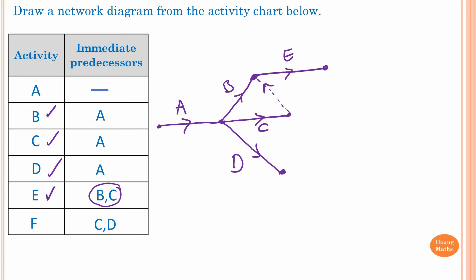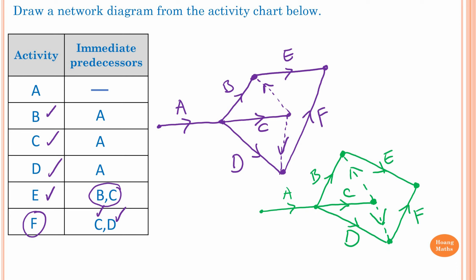For Activity F, we need to complete Activity C and D. You can connect from Activity D across to Activity F, and use a Dummy Activity to connect between C and D as well. So we connect like this — there you go. This is the network diagram for this activity chart. You can redraw the network diagram to make it look a bit better.